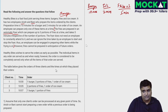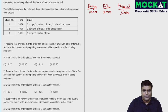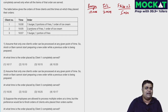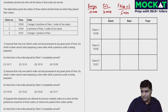The table gives the orders of three clients and the times at which they are placed. It's a short case with just three clients. For the first set of questions, assume only one client's order can be processed at any given time — Anish or Bani cannot start a new order while the previous one is being prepared. Think of it as three workers: Anish, Bani, and the fryer.